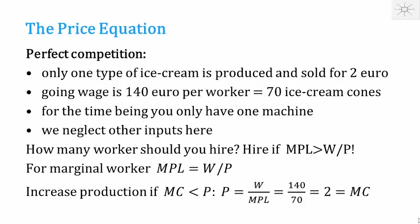You can put this another way: increase production if the marginal cost is lower than the price; the optimal level is where marginal cost equals price. For the third worker, the wage is 140 and he produces 70 cones, so the marginal cost is 140 divided by 70, which equals 2 — exactly the price of ice cream cones. So saying price equals marginal cost is equivalent to saying the marginal product of labour equals the real wage.